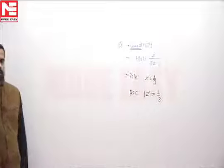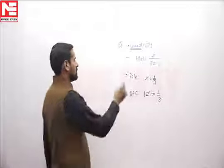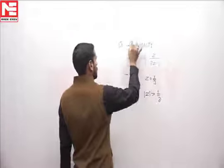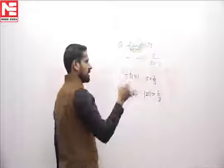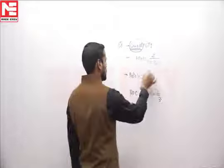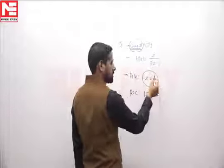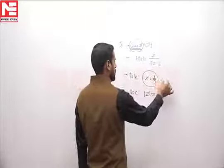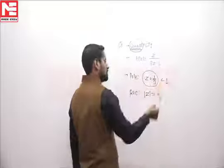We can check stability by two ways. Now for a causal system to be stable, the pole should lie inside the unit circle. Here the pole is located at z equals 1 by 3, and the magnitude of this pole is less than 1. Since this pole is lying inside the unit circle, then the nature of the system will be stable.